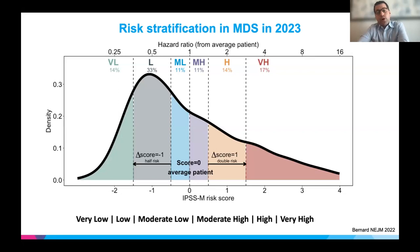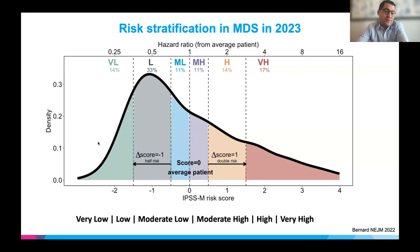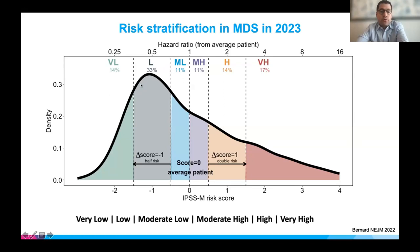Risk stratification in 2023 is accomplished using a scoring system called the IPSS-M — the M stands for molecular — which incorporates mutational information and cytogenetics to understand each patient's risk. It differentiates patients from very low and low risk all the way to high and very high risk. Today we're mainly focusing on low-risk and very low-risk patients, as anemia is their primary feature.